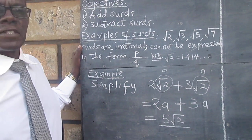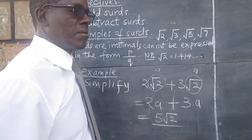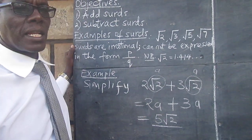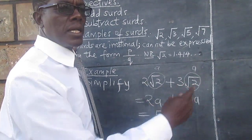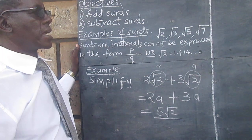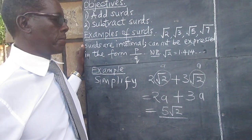I have just chosen A, but you can take any other letter, like X, Y — any letter can represent a surd.